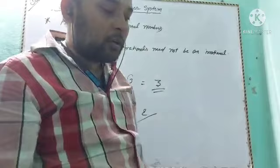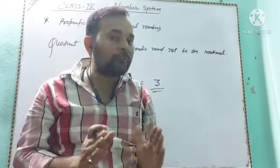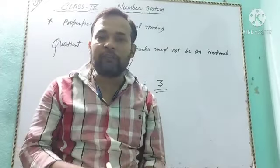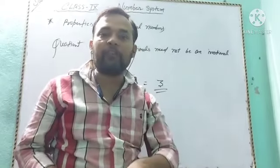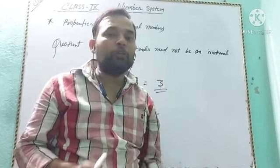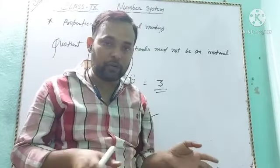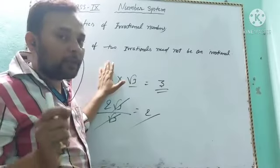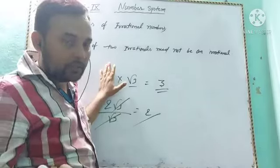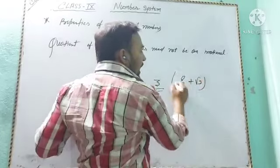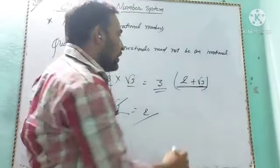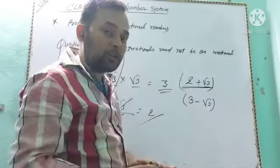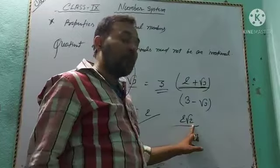To summarize: the sum, difference, product, and quotient of two irrational numbers need not be irrational. However, the sum, difference, and product of a rational and an irrational number are always irrational.